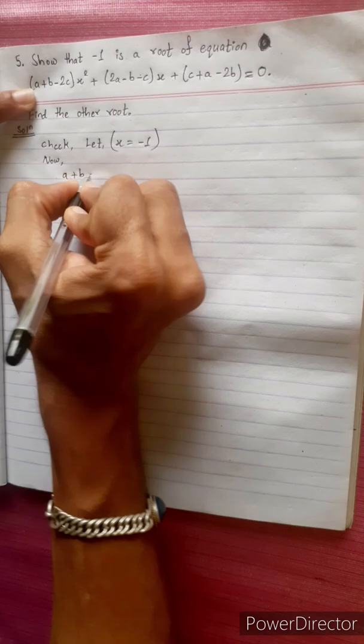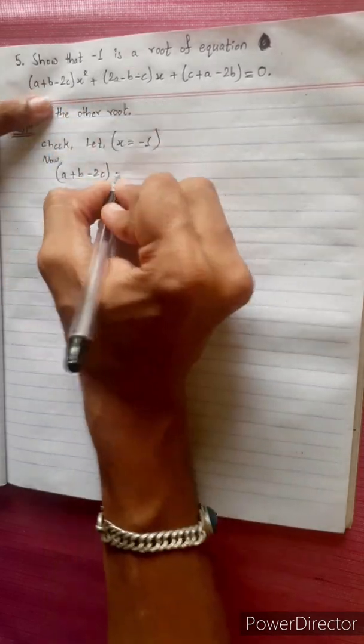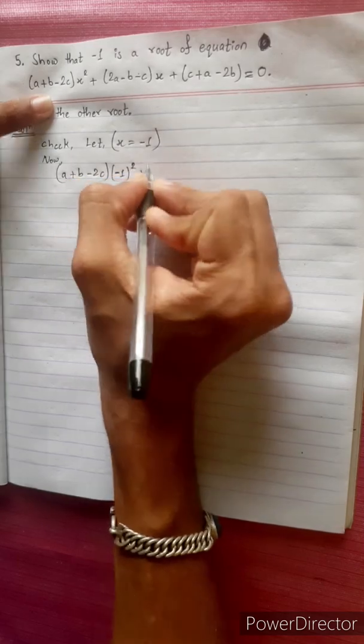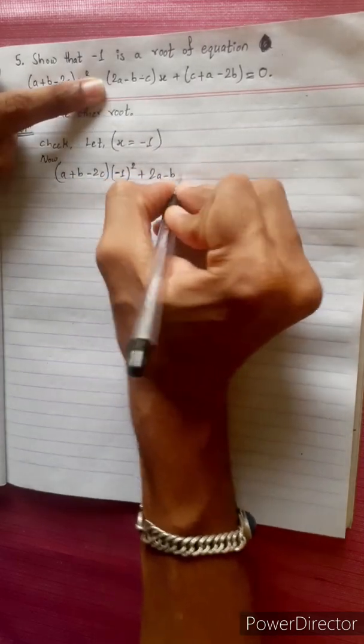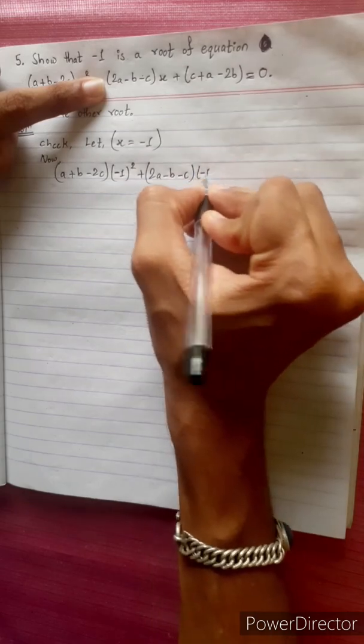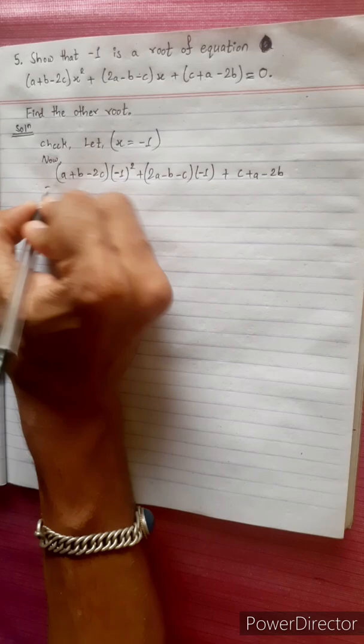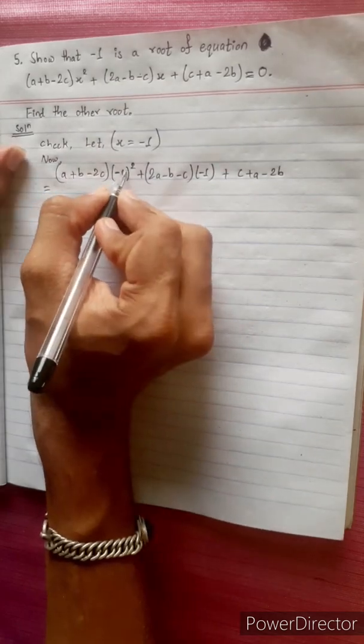Now, a plus b minus 2c. Yoy x square kore huma aami minus 1 aalcham. Minus 1 ko square. Plus 2a minus b minus c. X kore huma khi aalcham. Minus 1. Minus 1. Plus c plus a minus 2b. Equal to. Ava minus 1 ko square. Plus 1.